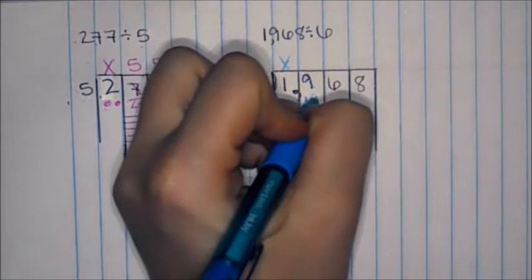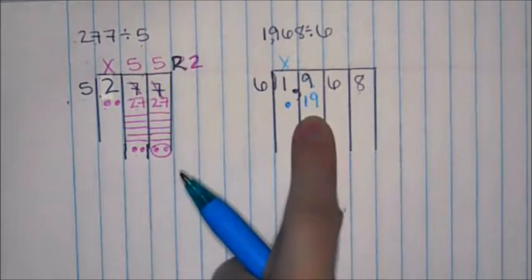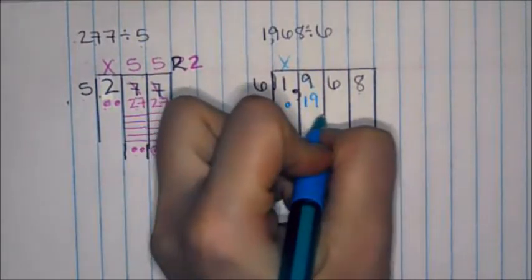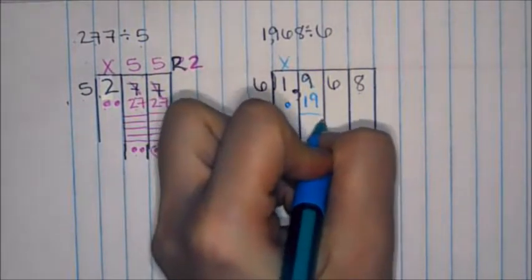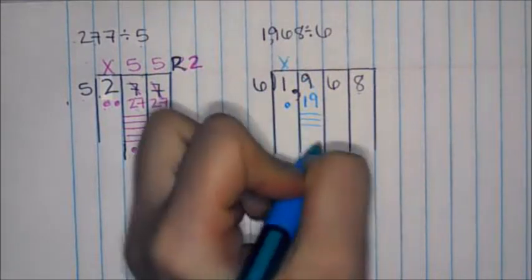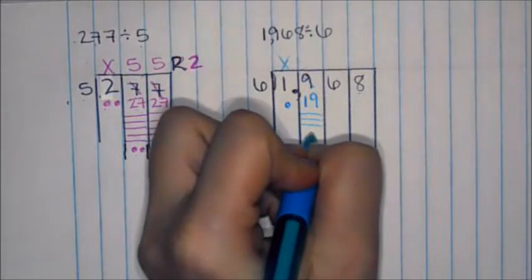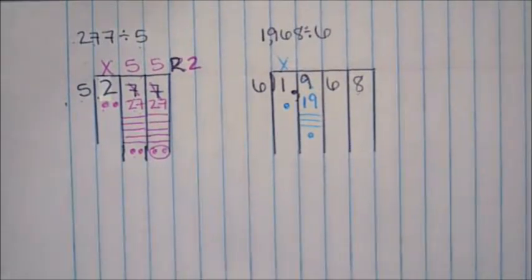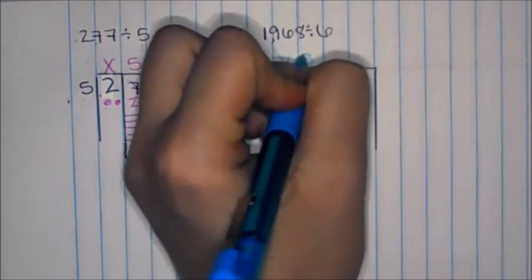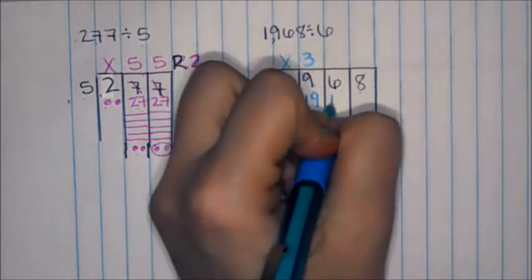So now I will have to do my multiples of 6 as close to 19 as I can without going over. 6 times 1 is 6. 6 times 2 is 12. 6 times 3 is 18. And then I can't multiply anymore. So I'm at 18 and then 1 dot is 19. I have 3 dashes. So I write a 3 in the quotient. I have 1 dot. I'm going to bring it over to this lane.